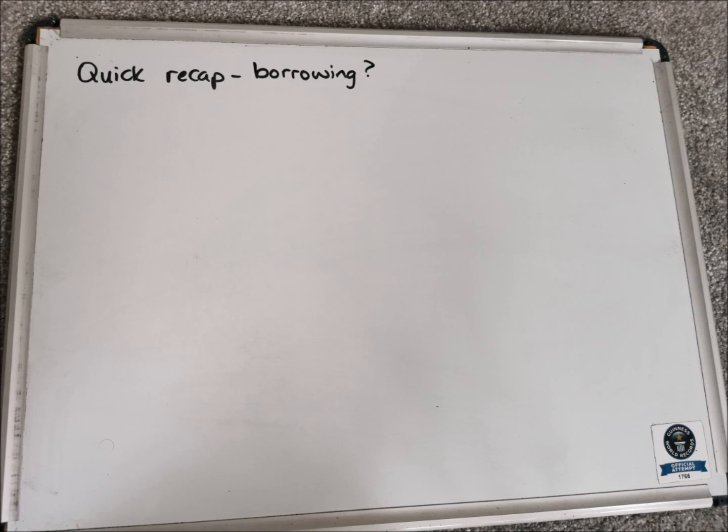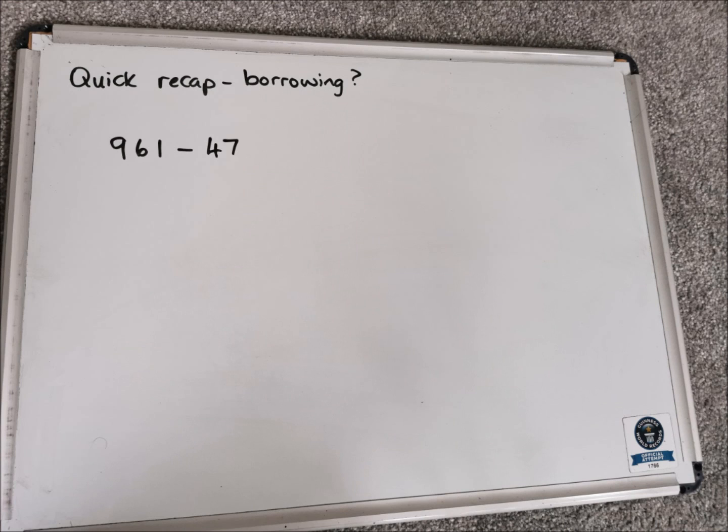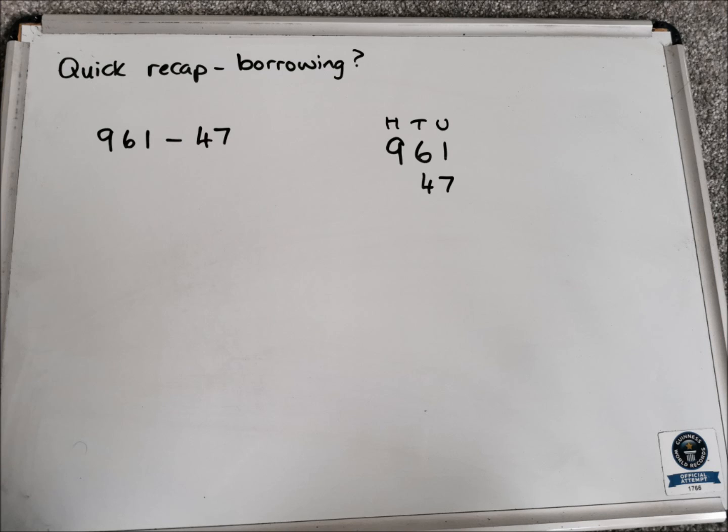So the first example we'll work through together is 961 take away 47. So in a chimney sum, we're going to lay it out like this. If it helps to have the hundreds, tens, and units labels at the top, fire those in, because that will help you organize your chimney sum really neatly, and that will help you avoid any errors that you might come across.